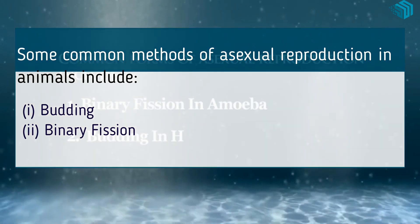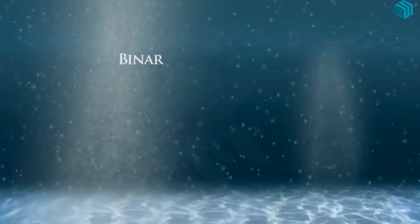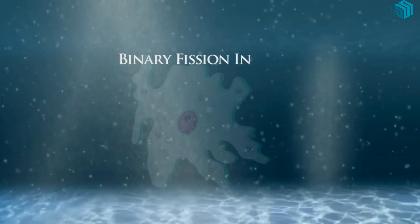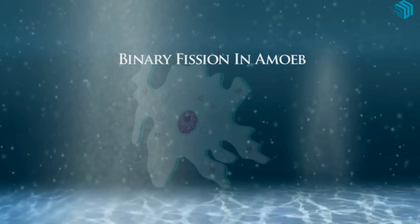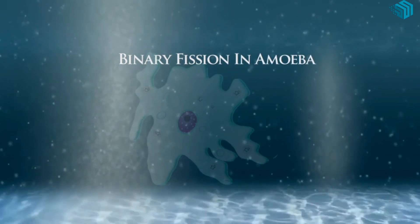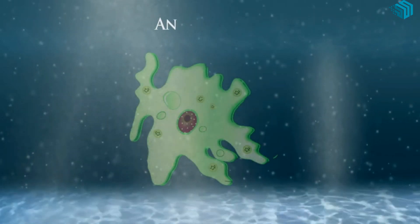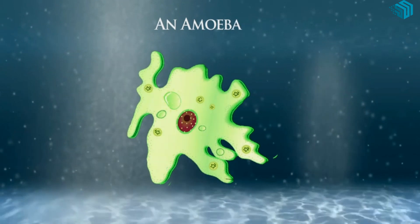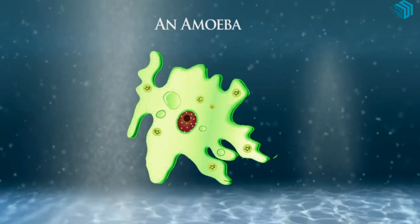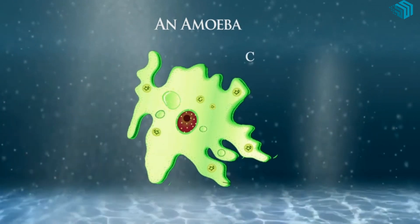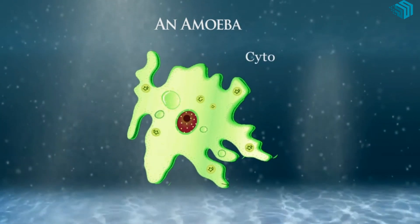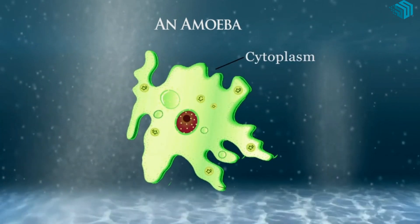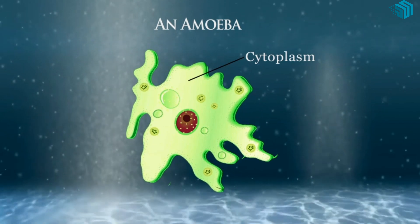First, let us learn about binary fission. Binary fission is the most common method of asexual reproduction. It involves the splitting of an organism into two.